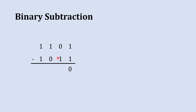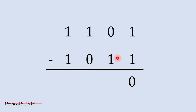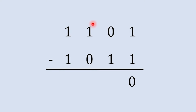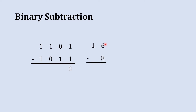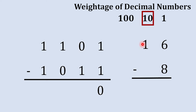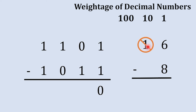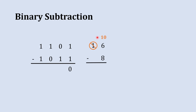In the next column we are going to subtract one from zero, so we can't do straightforward subtraction — we need to borrow one from the next column, just like we borrow in decimal subtraction. For example, in decimal if you want to subtract eight from six it is not possible, so we borrow one from the next column. But the weightage of the next column is ten times higher, so when we borrow that one, it becomes ten in the current column.